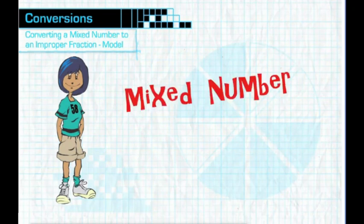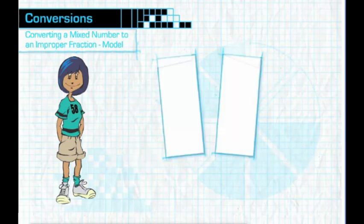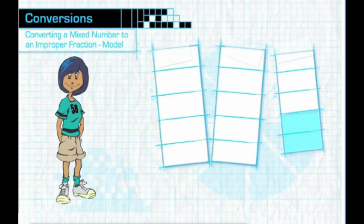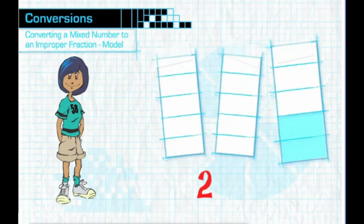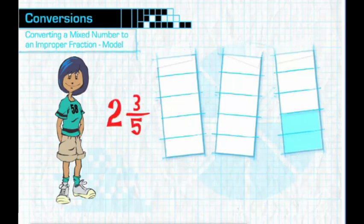We are going to convert a mixed number to an improper fraction equivalent using a model. We begin with two whole white bars, each divided by five, and a third bar also divided by five, but only three of the five sections are white. The two whole bars represent the whole number two, the three white sections represent the fraction three-fifths, and put together, you have the mixed number two and three-fifths.